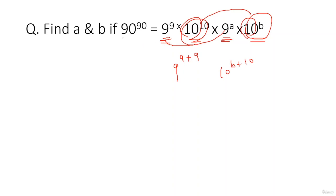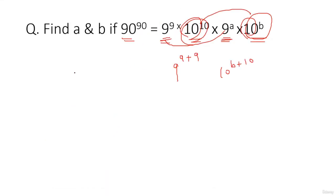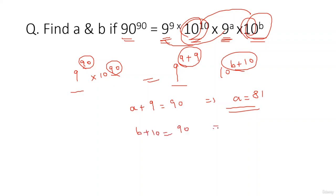Since the right-hand side has powers of 9 and 10, we split 90 on the left-hand side using the sixth property: 90 raised to 90 equals 9 raised to 90 times 10 raised to 90. Now comparing powers of 9 on both sides: 9^90 = 9^(a+9), so a + 9 = 90, giving a = 81. Comparing powers of 10: 10^90 = 10^(b+10), so b + 10 = 90, giving b = 80.